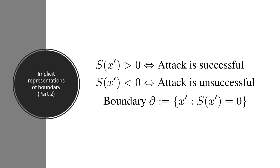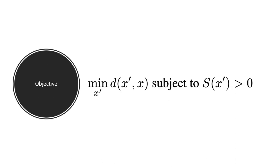S is positive if and only if the attack is successful and the boundary is defined as the set where S is zero. The objective can now be written into a unified representation, minimizing a certain distance metric subject to the constraint that the boundary function S is positive.